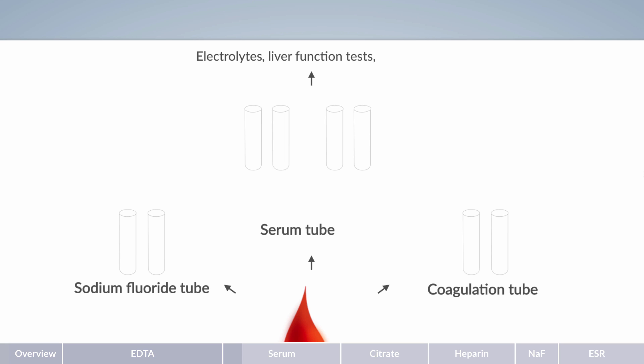Serum tubes are also used in serology, especially for the diagnosis and monitoring of rheumatic, immunologic, and infectious diseases. To promote blood clotting, silica particles are present in the tubes, acting as a clot activator.